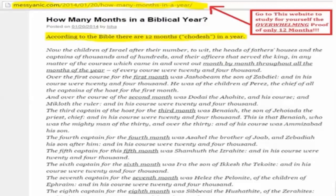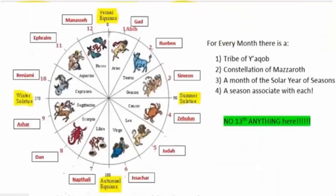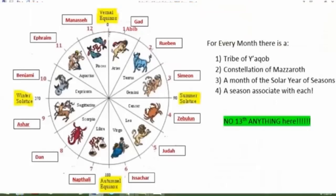Adding a 13th month is adding to the word of Yahuwah, and that is against his will — we are not to add or subtract from his word. The reason they have to add this 13th month is because the moon is not in sync with the seasons, and they know they have to keep the fixed moedim in line with the seasons. Otherwise, the feasts would be so out of whack it wouldn't make any sense.